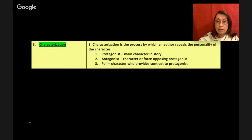And the third one is foil and this is a character who provides contrast to the protagonist. If you're not sure what a foil is, think about the story the diary of a wimpy kid. The main character is our protagonist. The older brother, Roderick, tends to be the antagonist and create the problems. And then the protagonist, the main character's best friend, is the foil. He kind of provides contrast. He's very different than the main character.